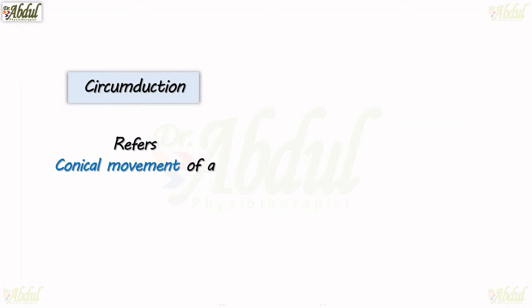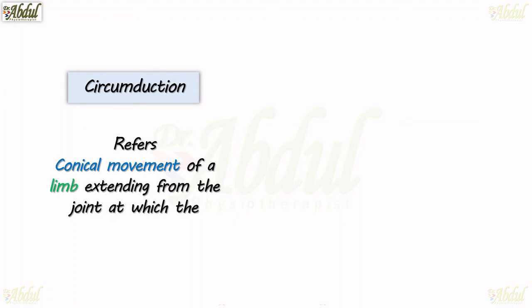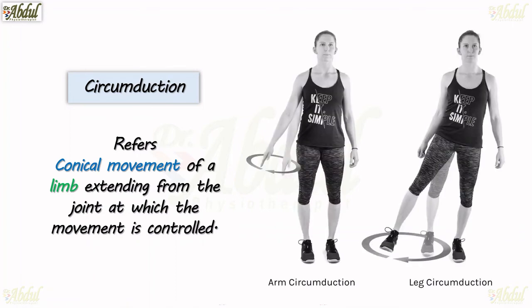Circumduction refers to the conical movement of a limb extending from the joint at which the movement is controlled — something like this, in the arm and the leg. Making a conical movement — the movement will look like a cone in shape.